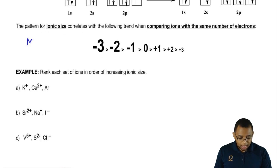Let's say I was ranking Mg2+, neon, and let's say one more here, F minus.